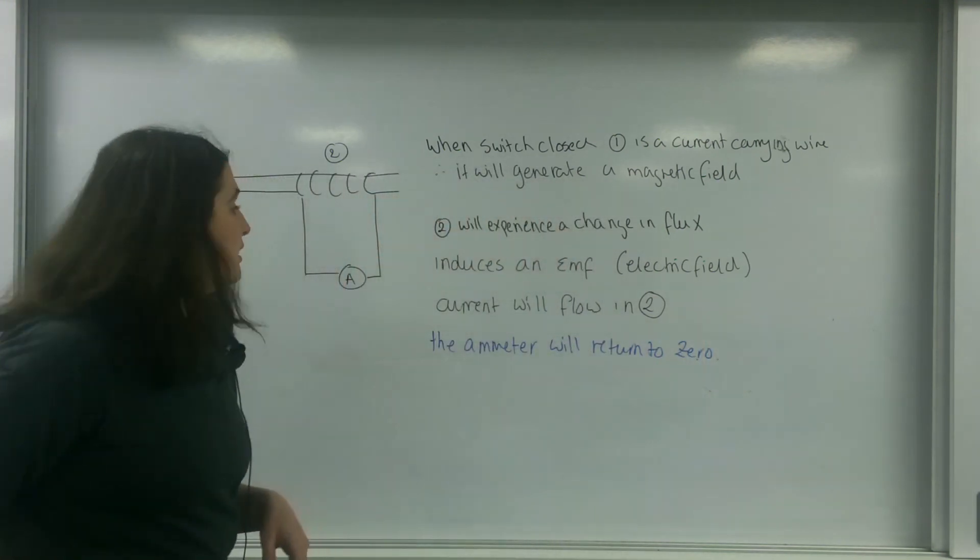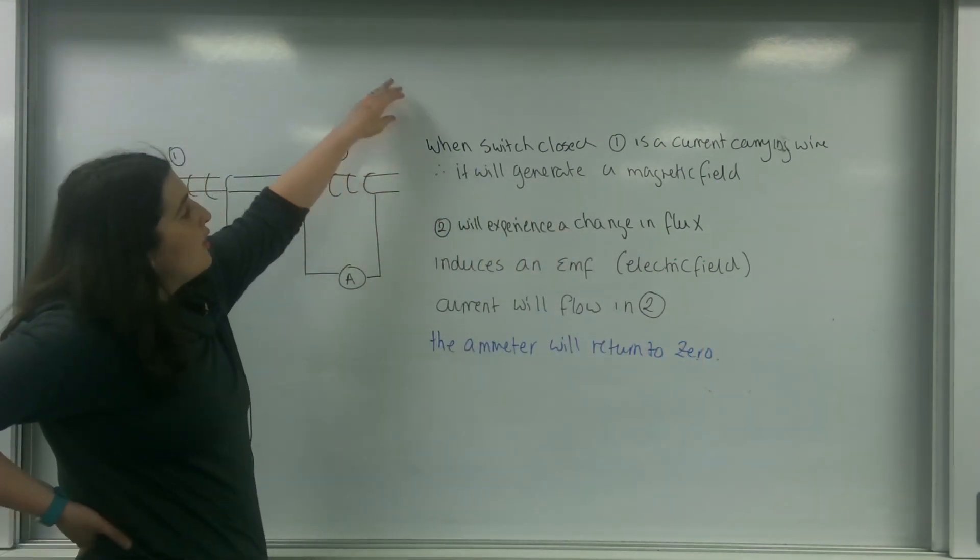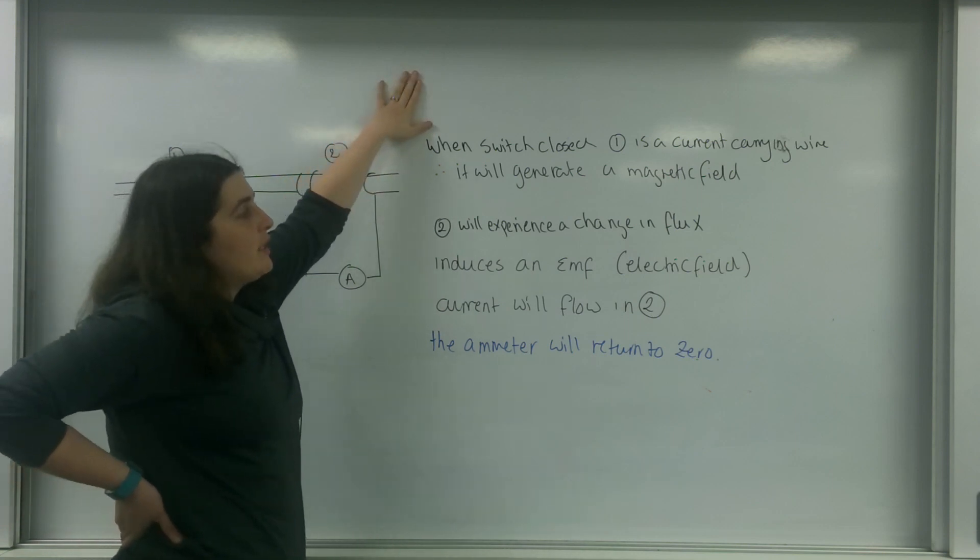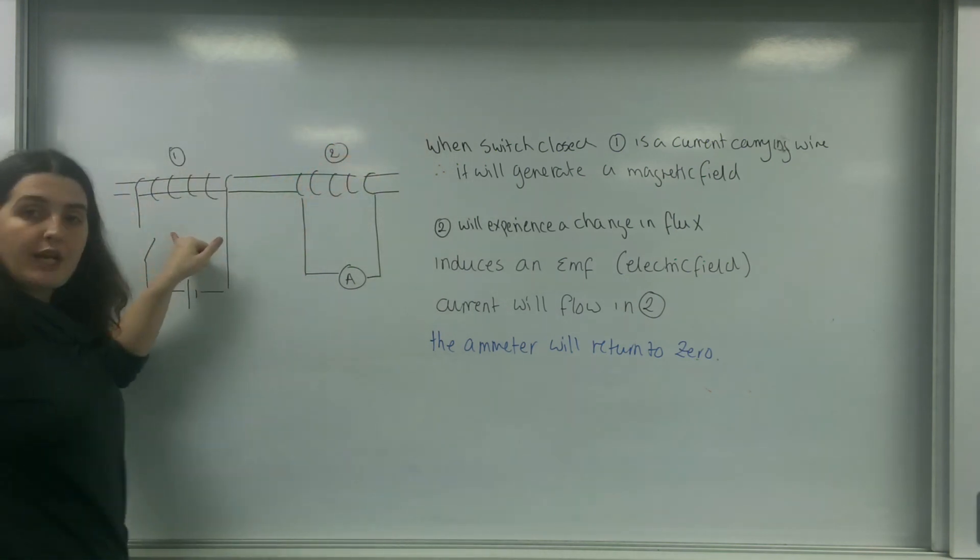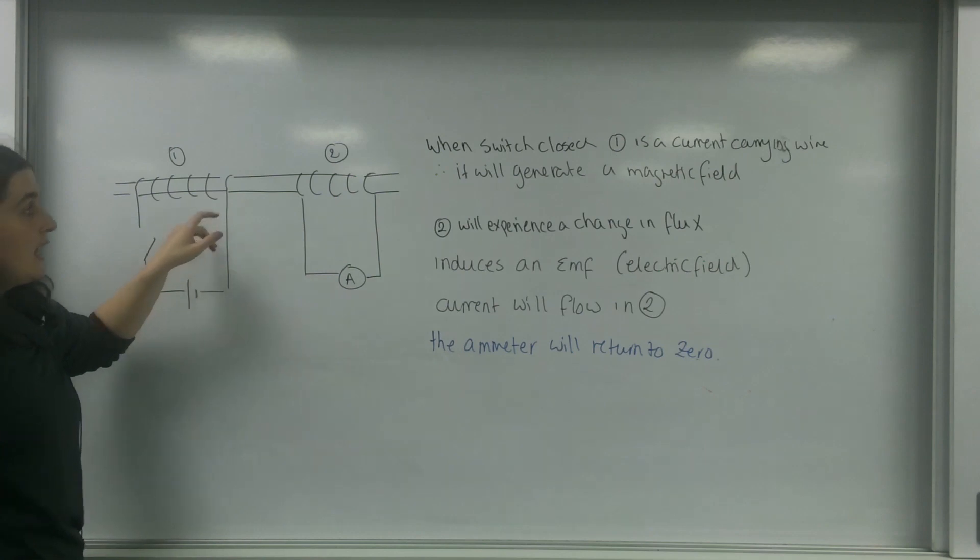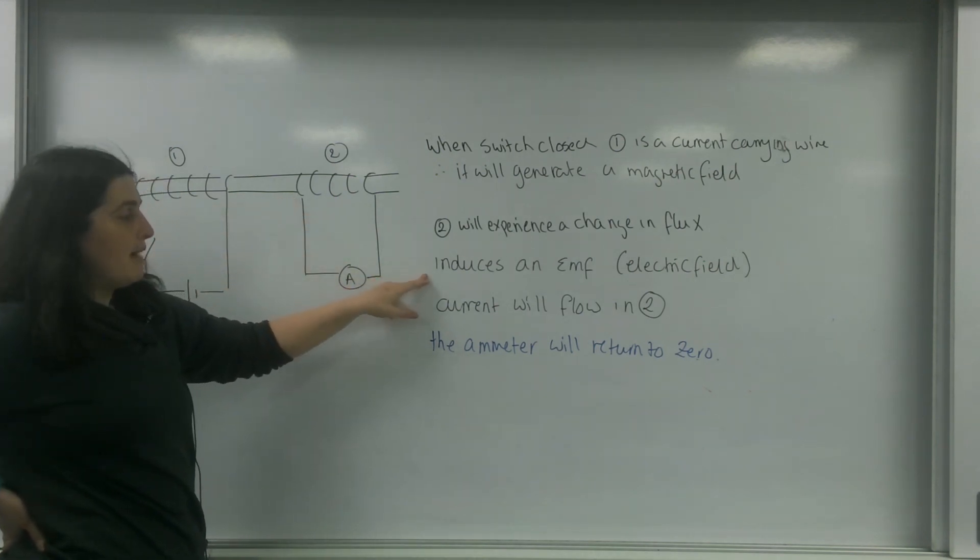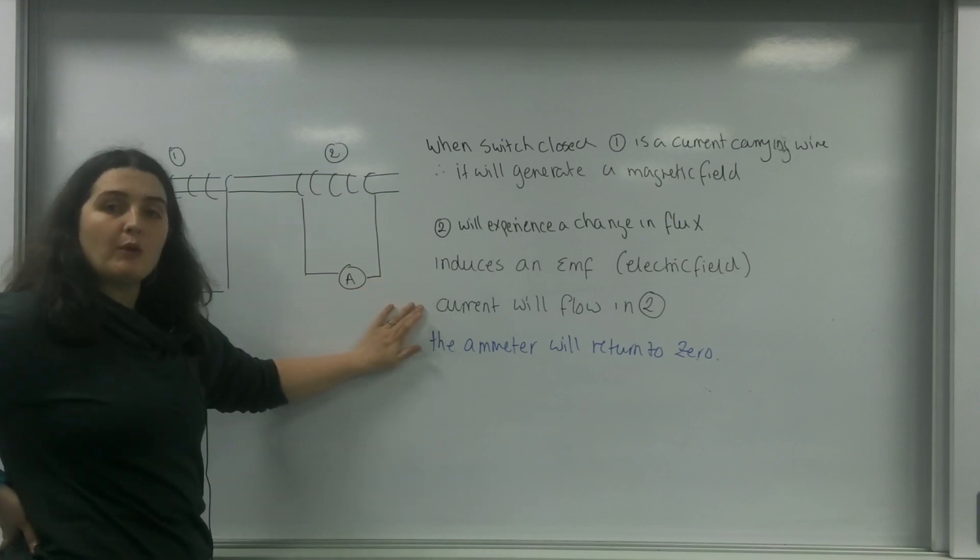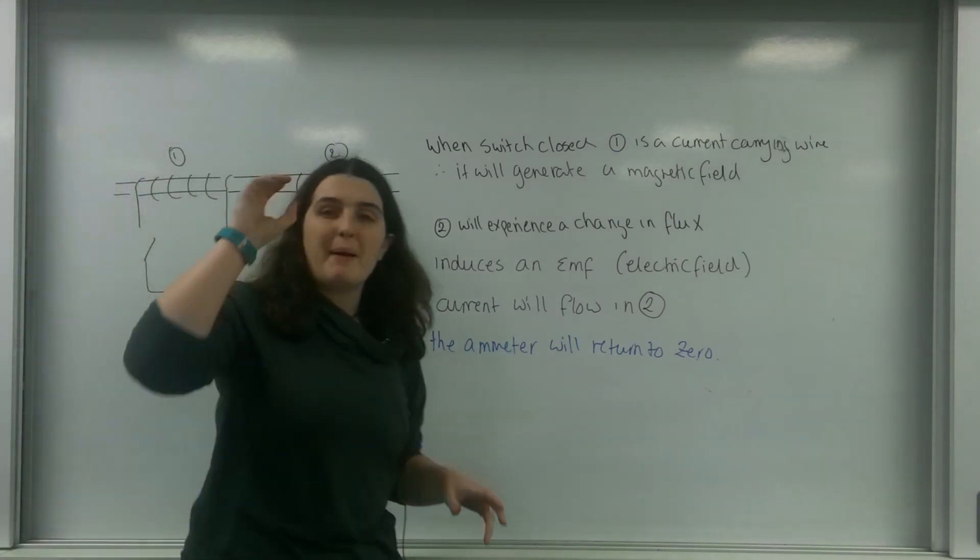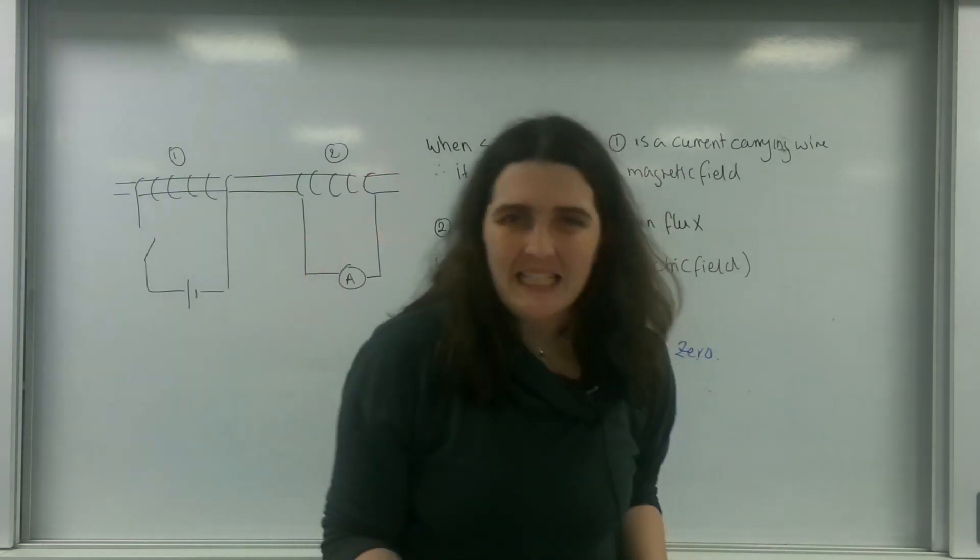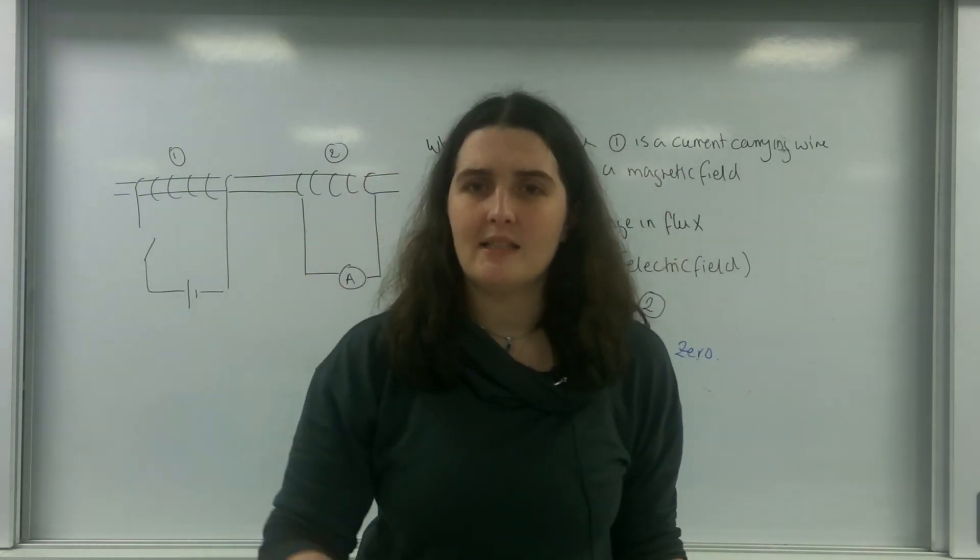The ammeter will return to zero. Now, the first three lines here. When the switch is closed, one is a current carrying wire and will generate a magnetic field. Two will experience a change in flux, which induces an EMF. Therefore, current will flow in two. That is the basis. Those black lines are the basis of electromagnetic induction.